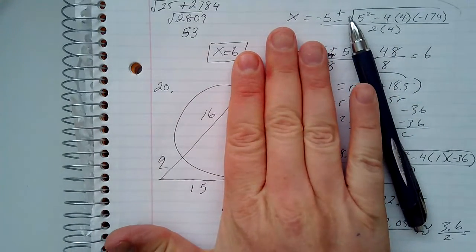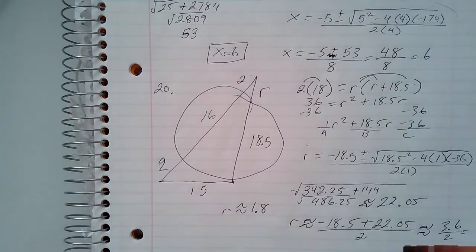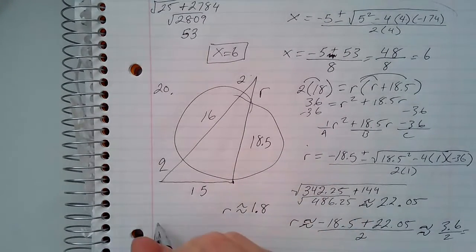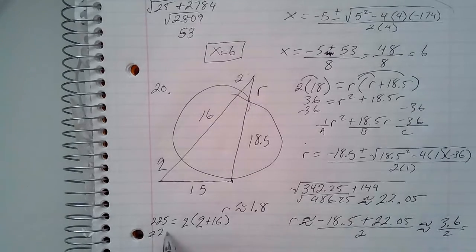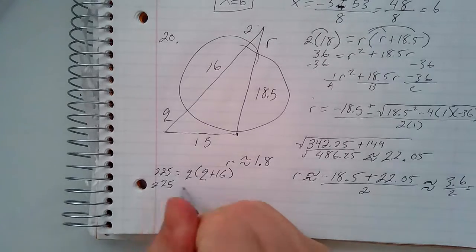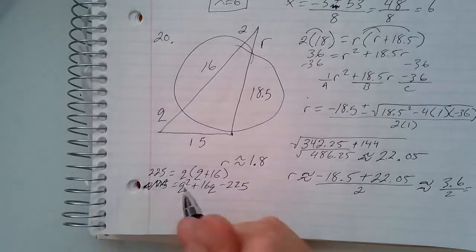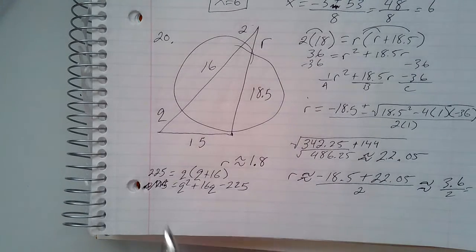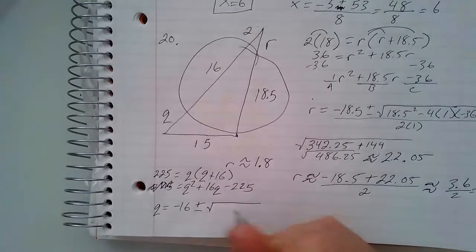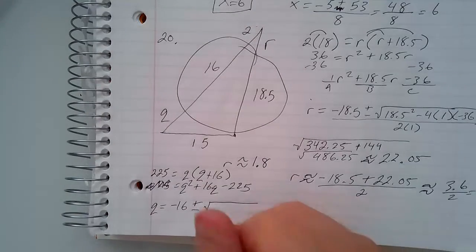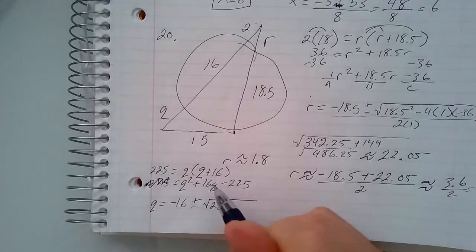Now we do the q portion. We have 15 times 15 equals q times q plus 16, so 15 squared which is 225 equals q times q plus 16. That gives 225 equals q squared plus 16q. Moving 225 over gives zero equals q squared plus 16q minus 225. Using the quadratic formula: q equals negative 16 plus or minus the square root of 16 squared, which is 256, minus 4 times a, which is 1.